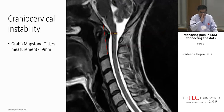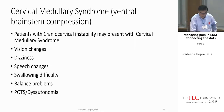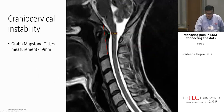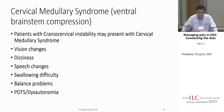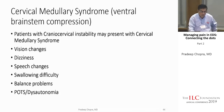There are three basic angle measurements used: the clivoaxial angle, the Harris measurement, and the Grabb-Mapstone-Oaks measurement. Sometimes neuroradiologists measure them, sometimes neurosurgeons prefer to do their own. You can see ventral brainstem compression — where the front of the brainstem is getting pinched — as part of cervical medullary syndrome. These patients present with vision changes, dizziness, speech changes, difficulty swallowing, and symptoms of POTS and dysautonomia.